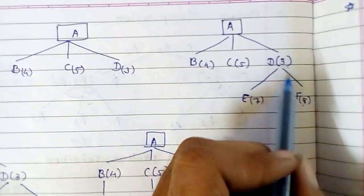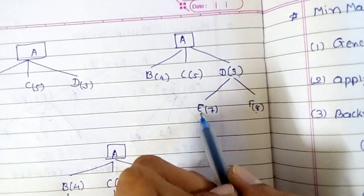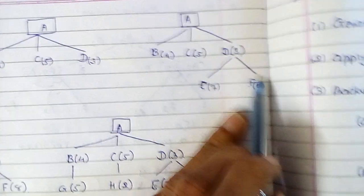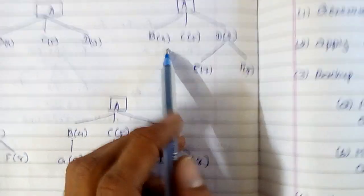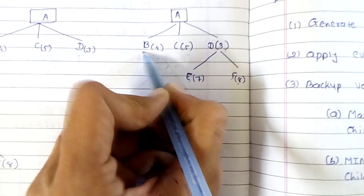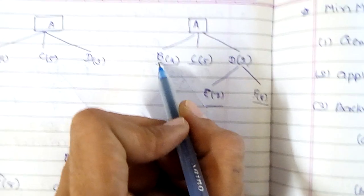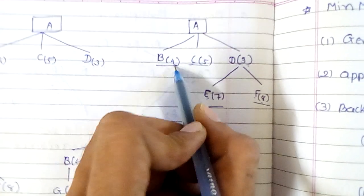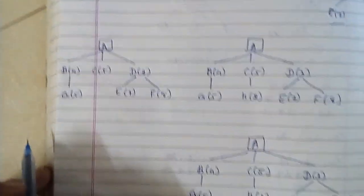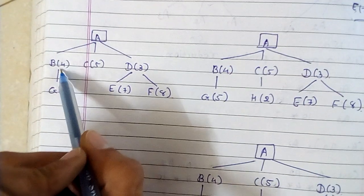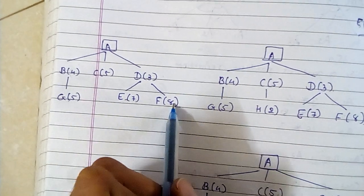Now again do the same. D is in the open list and B, C, E, and F are in the closed list. After generating E and F, find out the minimum from B, C, E, and F. The minimum is B, which is giving me 4.